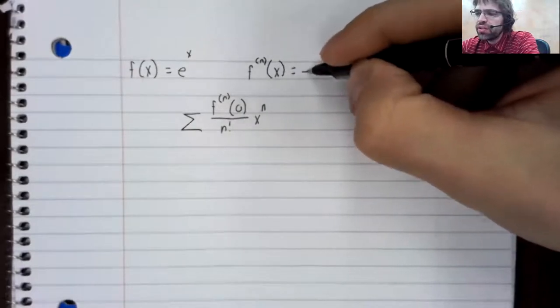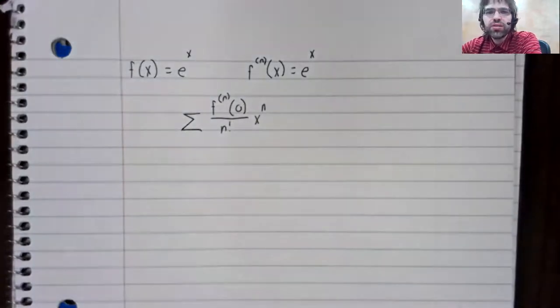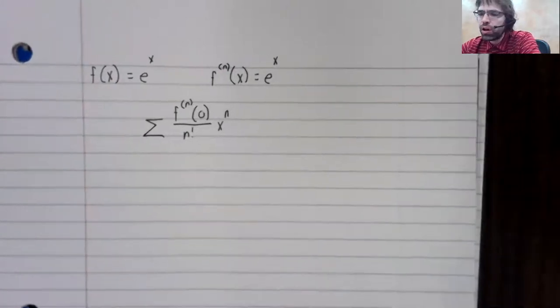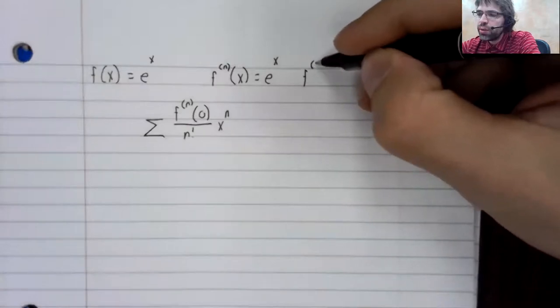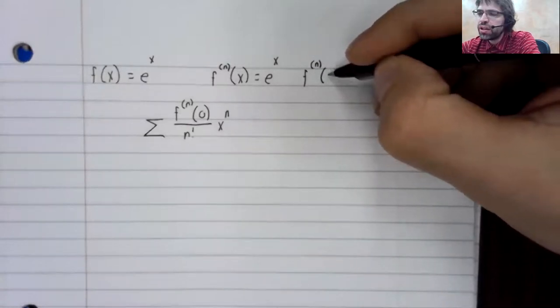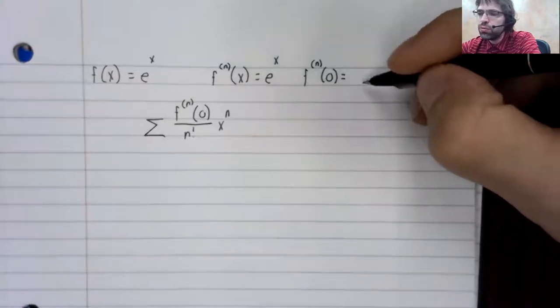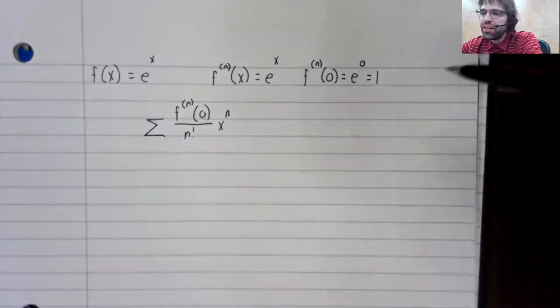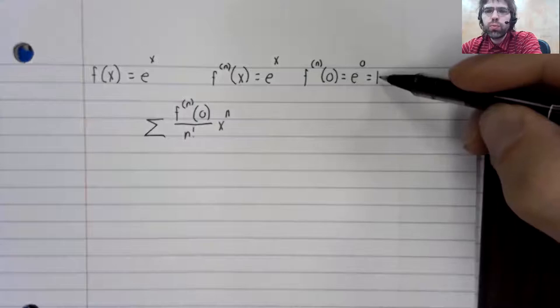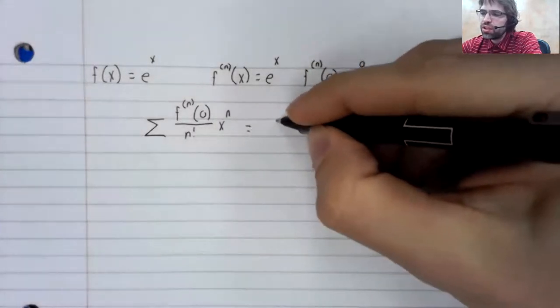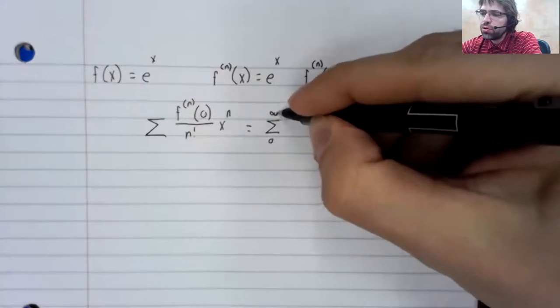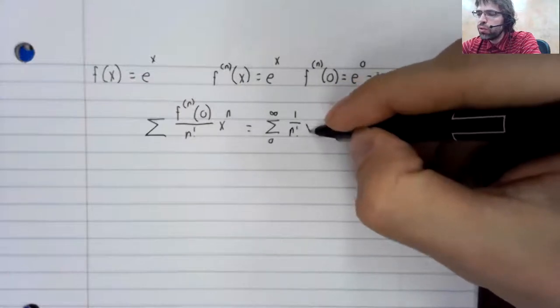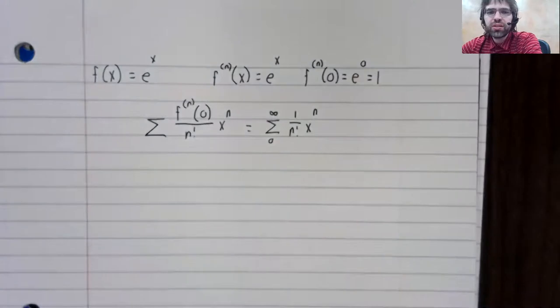The first derivative is still e to the x. The second derivative is still e to the x, and so on. So when we take the nth order derivative and plug in zero, it doesn't matter what n is, we always get one. So this is the sum from zero to infinity of one over n factorial times x to the n.